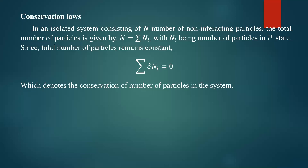Today we will consider the conservation laws that are helpful to understand the distribution function in statistical mechanics. If you take an isolated system consisting of a large number of particles — let us take N number of particles which are non-interacting, meaning they are free particles with respect to one another — the total number of particles in the system is given by N equals summation of ni, where ni is the number of particles in the ith state.